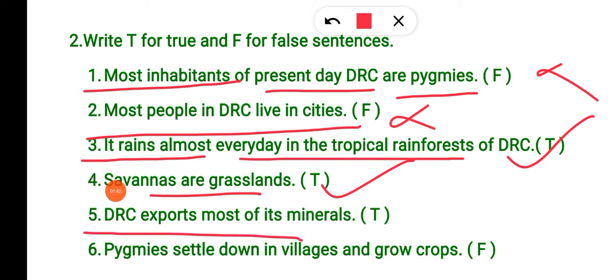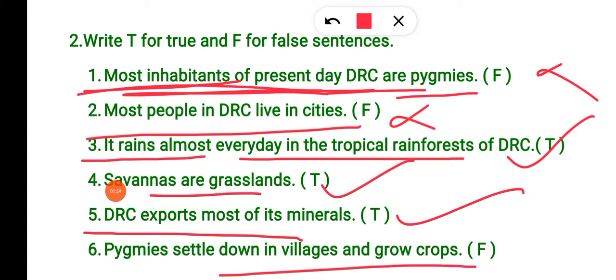DRC exports most of its minerals — true. Most inhabitants of DRC in the present day are not Pygmees — okay. Pygmees settle down in villages and grow crops — false.